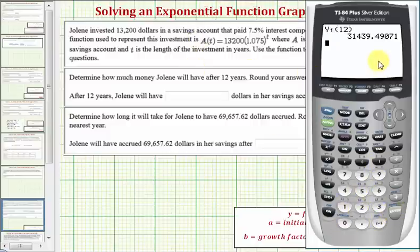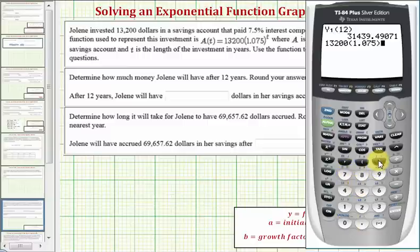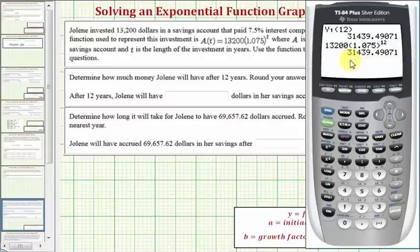And again, just to make sure we understand, this is the same thing as just substituting 12 for t here: 13,200 times 1.075, close parenthesis, raised to the power of 12, will give us the same result. So to the nearest cent, or two decimal places, we have $31,439.49.